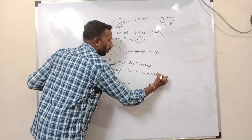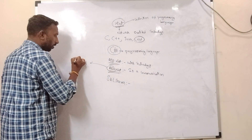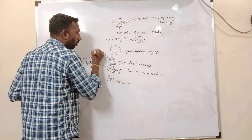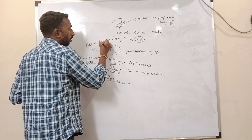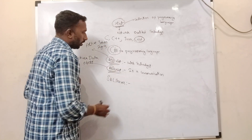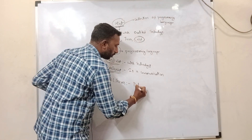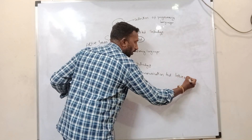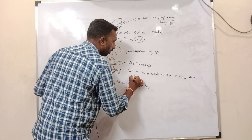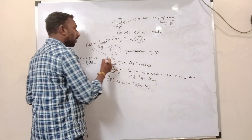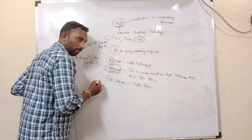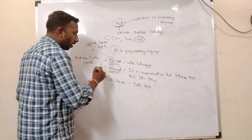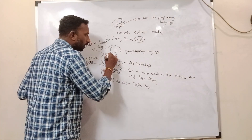ADO stands for ActiveX Data Objects, whereas ASP stands for Active Server Pages. SQL Server is our database. ADO.NET acts as a communication tool between ASP.NET and SQL Server. So you use ADO.NET to communicate with SQL Server where we store our data, and ASP.NET is our front-end web technology.